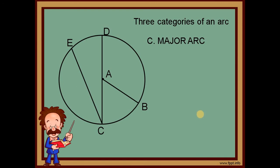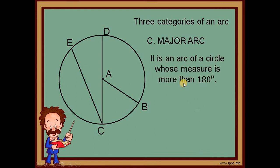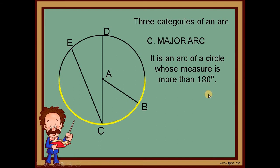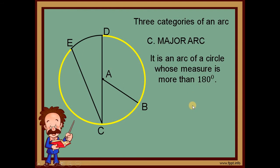The third category is the major arc — an arc of a circle whose measure is more than 180 degrees; in short, it goes beyond the halfway point. To identify it, find the diameter first. We can name this arc as arc DBE, or arc DCE — these two are equal because B and C are both inside that arc. We only use three letters at most; that is sufficient.